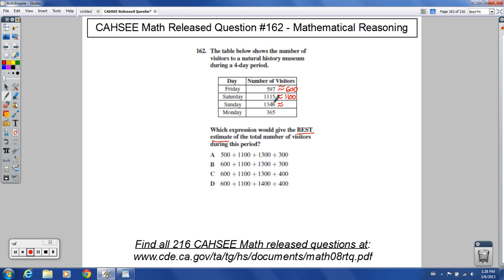Here, same thing. Tens digit, four or lower, round down. That's closer to 1,300 than it is to 1,400.